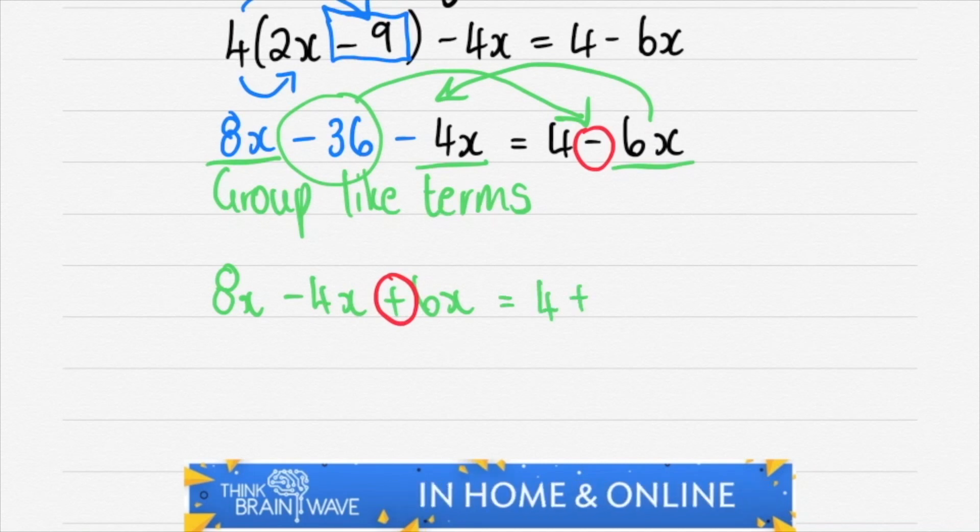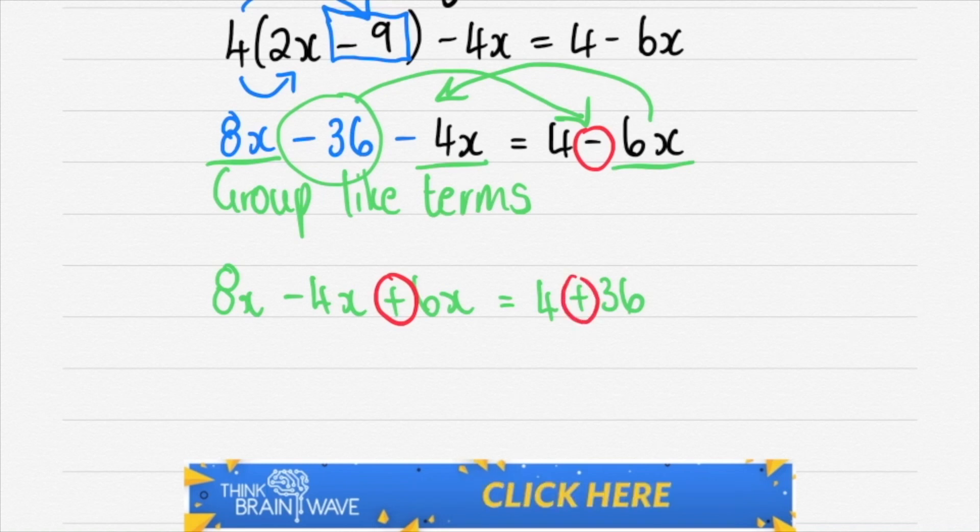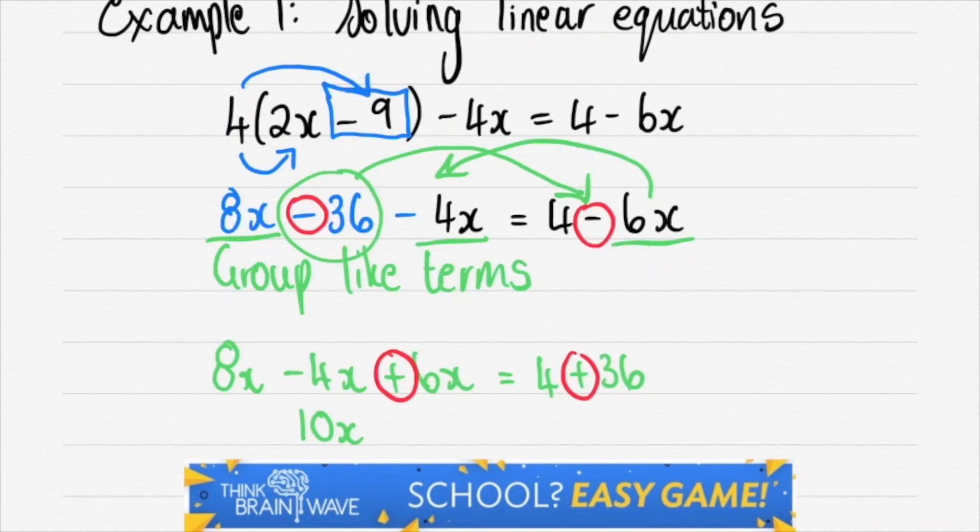So when you take the minus 6x across it becomes plus 6x. Now when you take the minus 36 across the equal sign it becomes plus 36. So now we do our basic algebra.